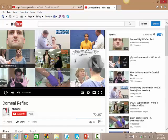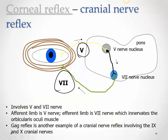In the corneal reflex test, a cotton wisp is used to approach the patient from the side while they look straight ahead. The examiner touches the wisp to the eye and looks for a blink response. This blink tests both cranial nerve five (afferent) and cranial nerve seven (efferent). Another similar cranial reflex is the gag reflex — the ninth nerve is the afferent limb and the tenth cranial nerve is the efferent limb, contracting the pharyngeal muscles.